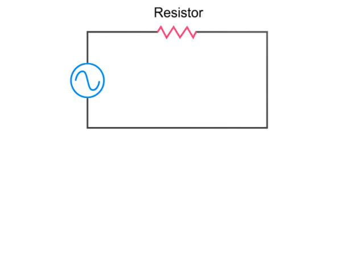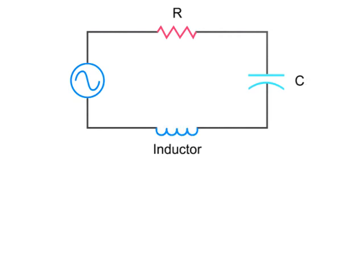Circuits that contain resistors, capacitors, and inductors, either in series or parallel, are known simply as RCL circuits. Specific equations can be used to determine the values of resistance, impedance, current, and voltage in RCL circuits.